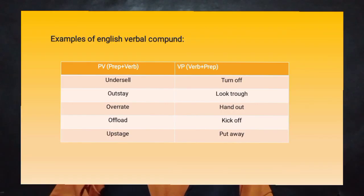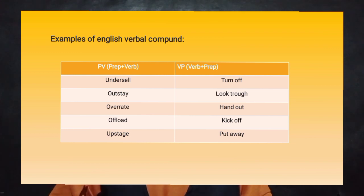There are some examples of English Verbal Compound. The first is preposition plus verb. For examples: undersell, outstay, overate, offload, and upstitch.